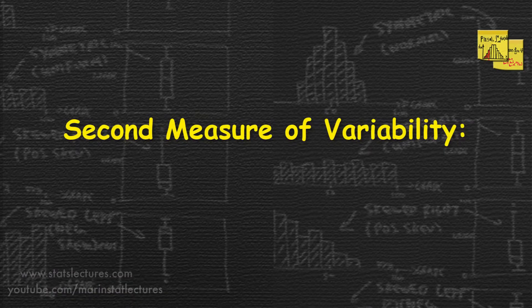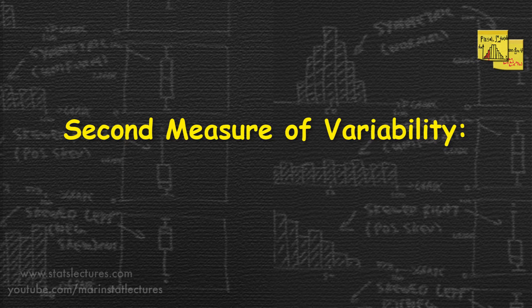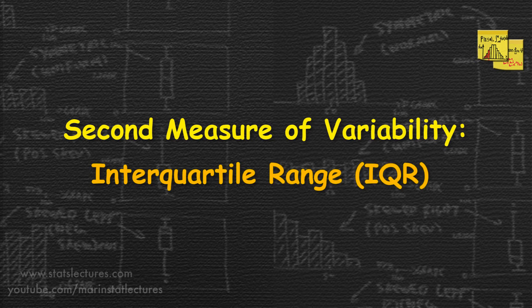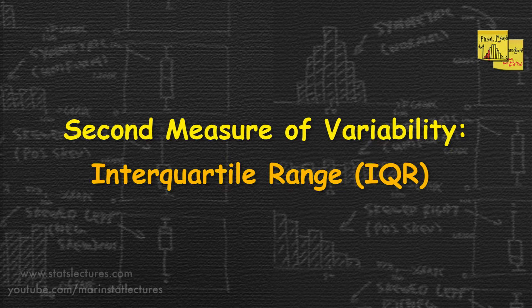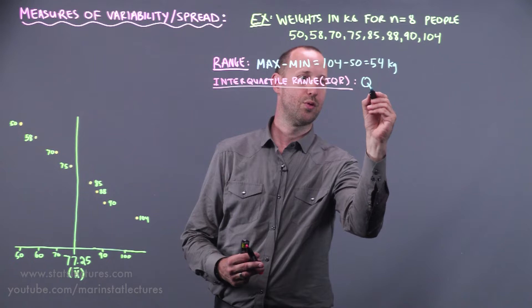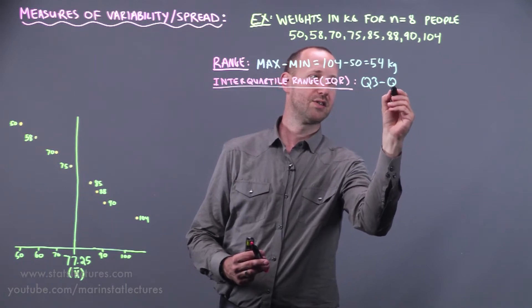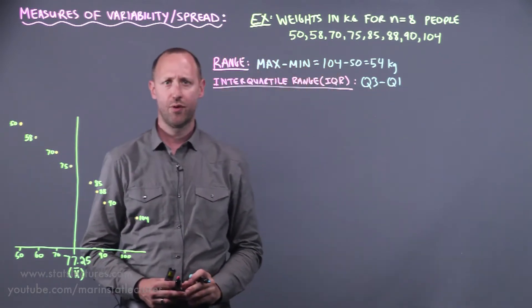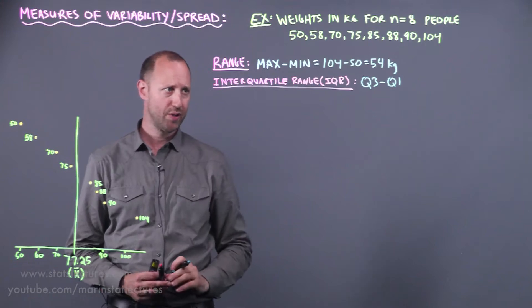The next measure of spread or variability is called the interquartile range. While that's a technical sounding word we'll break it down. What this is, is the third quartile minus the first quartile.